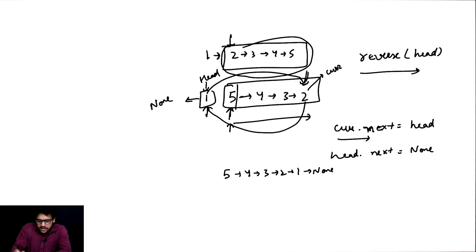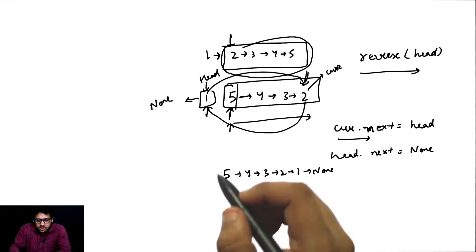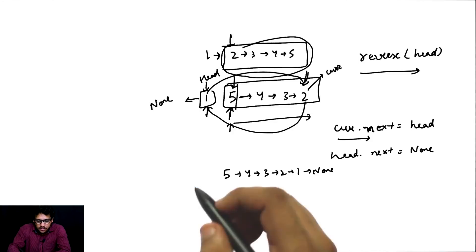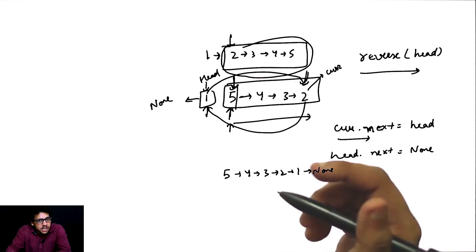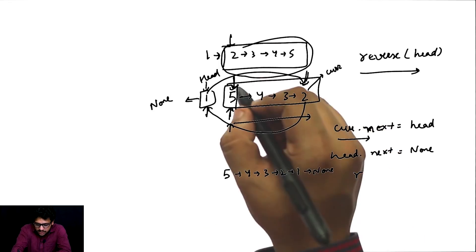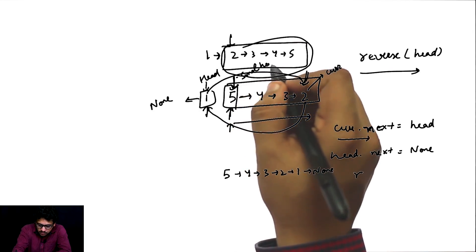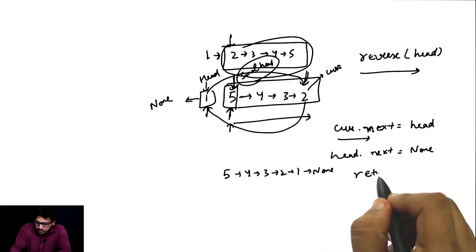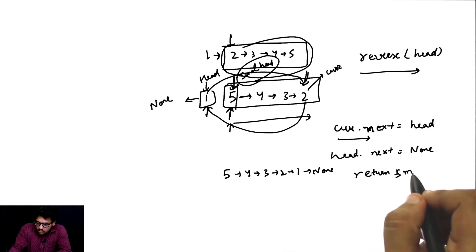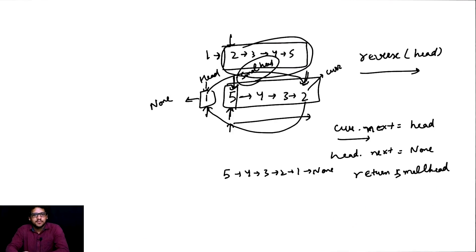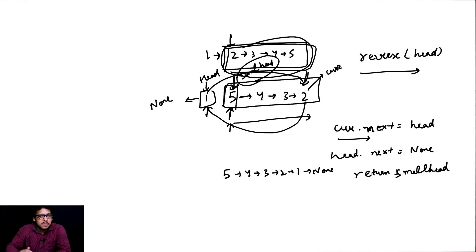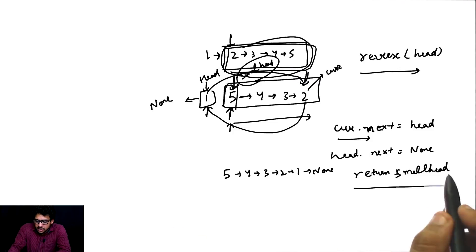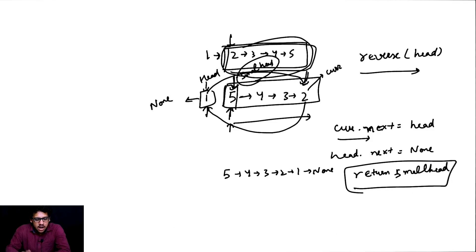So head.next becomes None, and my new linked list will become 5→4→3→2→1→None. In the end I need to return the head of this linked list — whatever came from the induction hypothesis. That will be the same head, so I will return small_head and I am done. I call the induction hypothesis, implement the induction step, and my problem is solved.